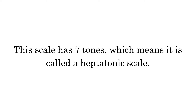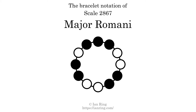This scale has 7 tones, which means it is called a heptatonic scale. This is a bracelet notation diagram of scale 2867. The shaded circles represent tones that appear in the scale, and they are read clockwise, starting at the top.